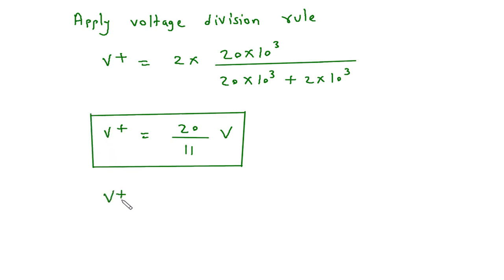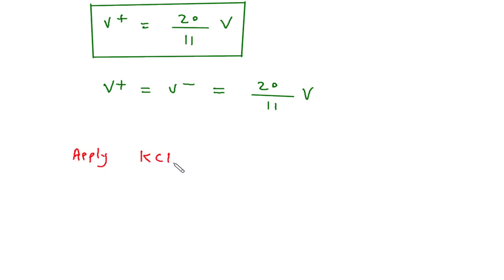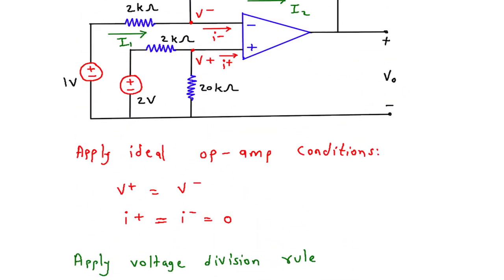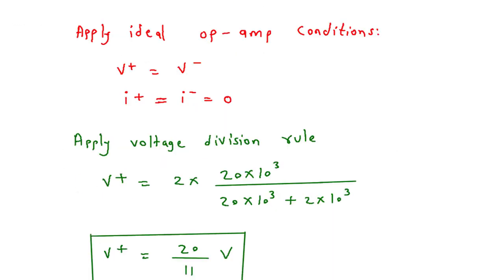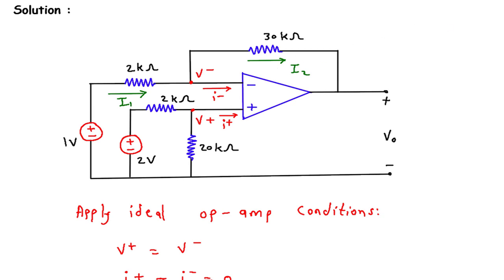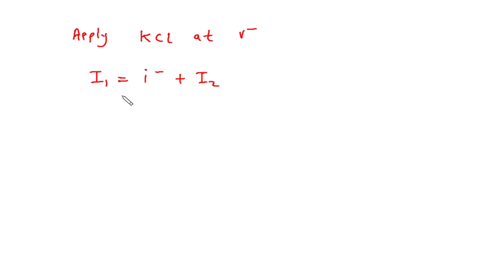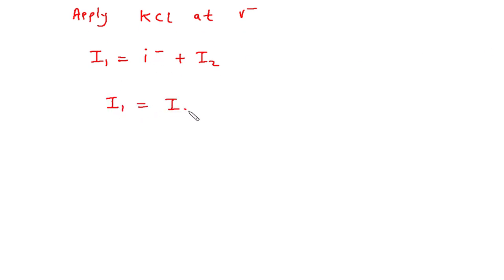Since according to the ideal op-amp condition V+ equals V−, we know V− = 20/11 V. Now let's assume this current is I1 and this current is I2. Applying KCL at the V− node: the entering current is I1, so I1 = I− + I2. But since I− = 0 by the ideal op-amp condition, we get I1 = I2.